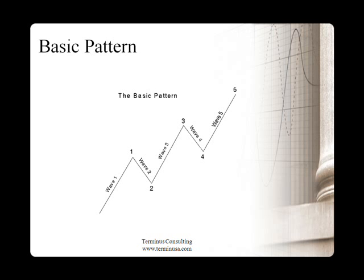Elliott bases his theory on a basic pattern. The basic pattern is an impulse move — in this case an upturn — in a format of 5 waves: waves 1, 2, 3, 4, and 5. This is an upturn, and the main concept in the theory is the inherent fractal nature inside the pattern.